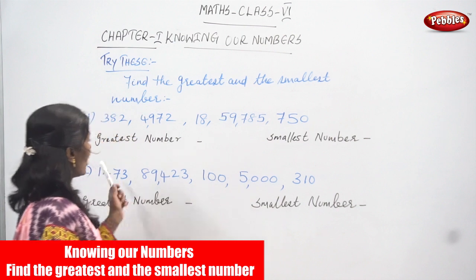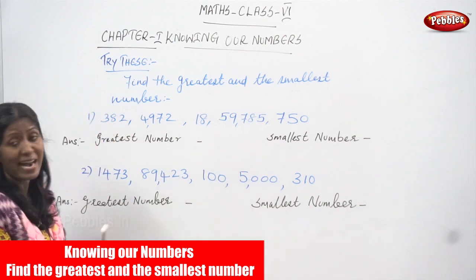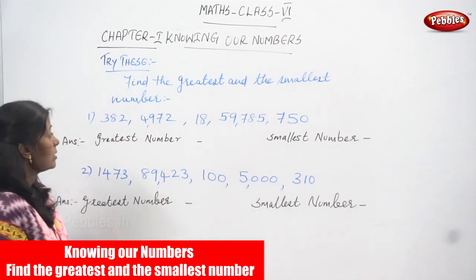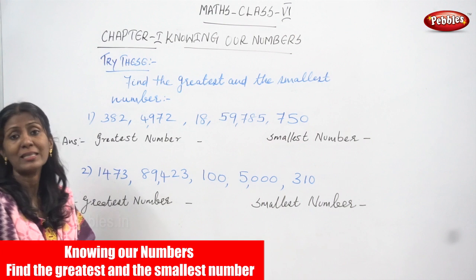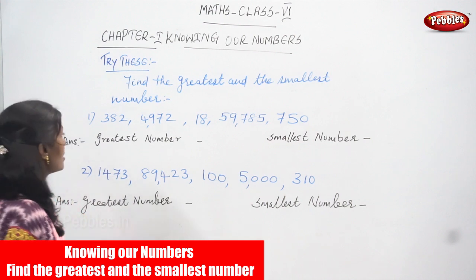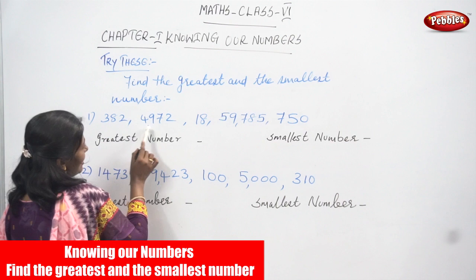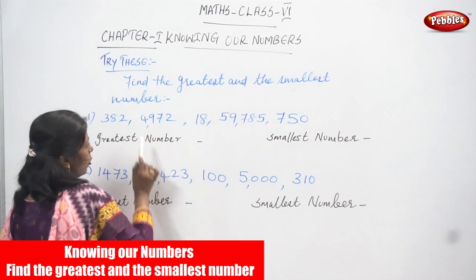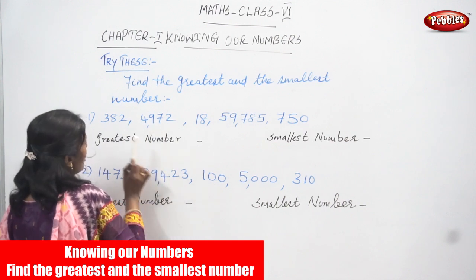So, you have to find the greatest number and the smallest number. You have to consider only the number of digits — it is very important. So, here, how many digits? The first number has 3 digits. The second is 4 digits. The third has 3 digits. The fourth has 4 digits.